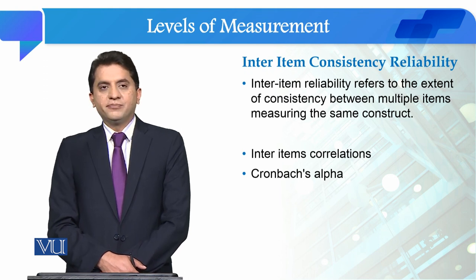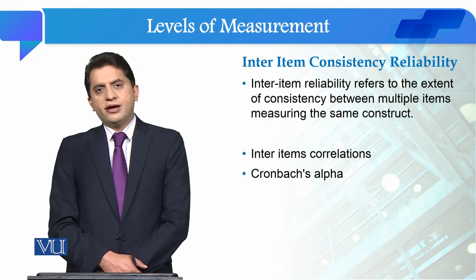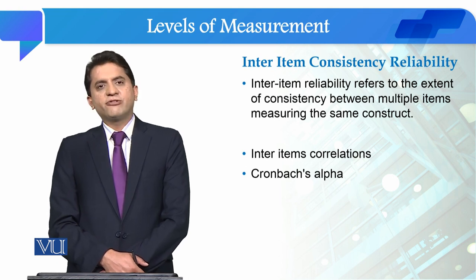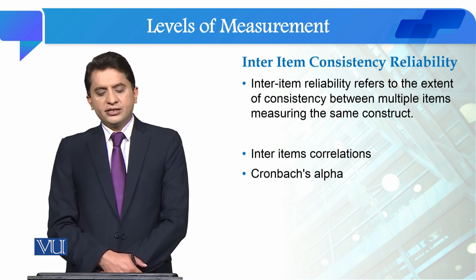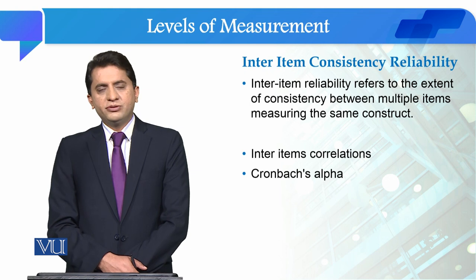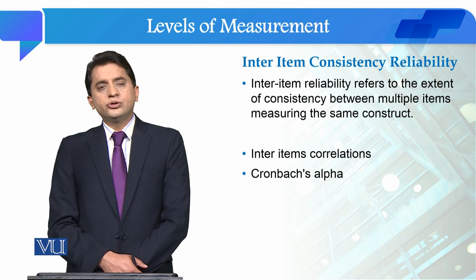The last type of reliability is inter-item consistency reliability. یہ the most used form of reliability ہے — یعنی ہم جب social science research میں reliability کو measure کرتے ہیں تو ہم زیادہ تر اس form of reliability کو دیکھ رہے ہوتے ہیں۔ اس form of reliability میں we actually check the consistency between the multiple items measuring the same constructs.